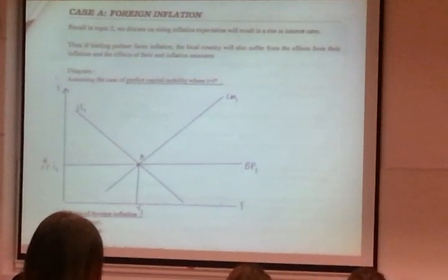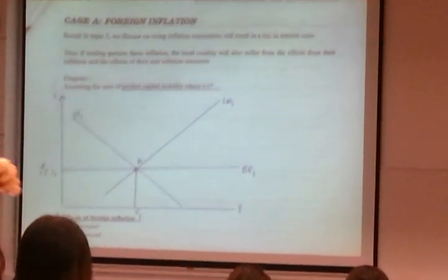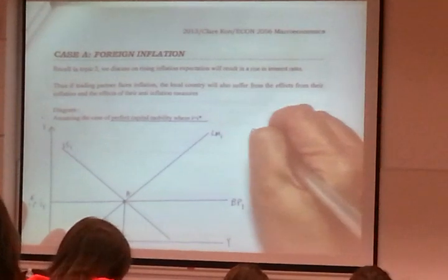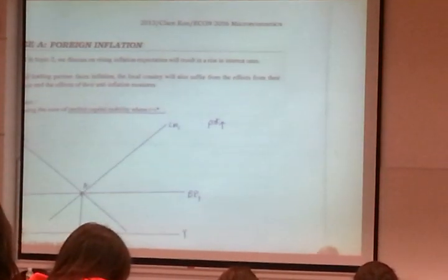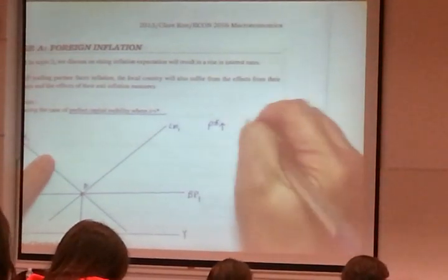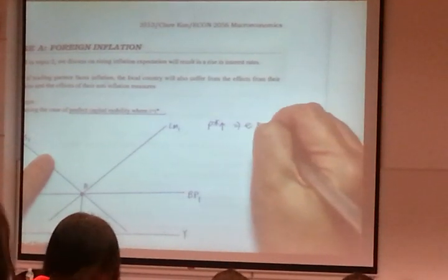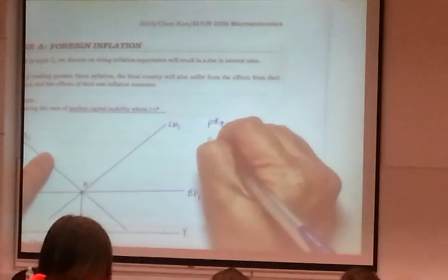So this is a country with perfect capital mobility at equilibrium point A first. We are told there is foreign inflation. So in this case, P star, foreign price, went up. In this case, real exchange rate will go down.